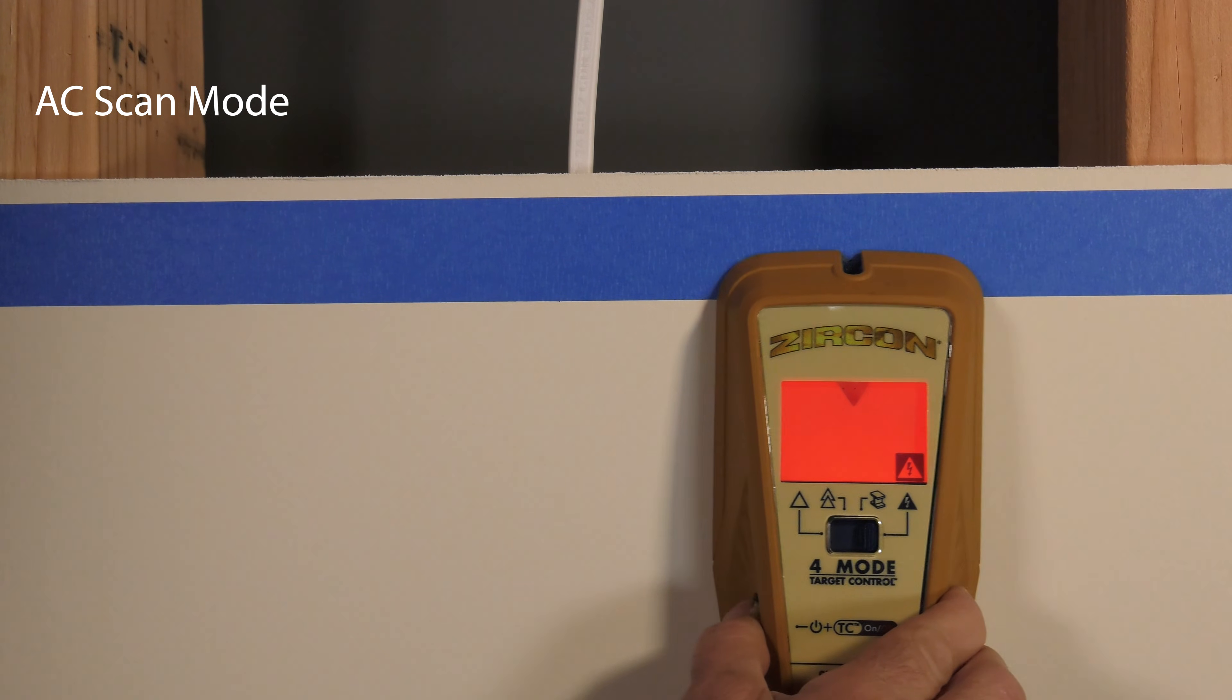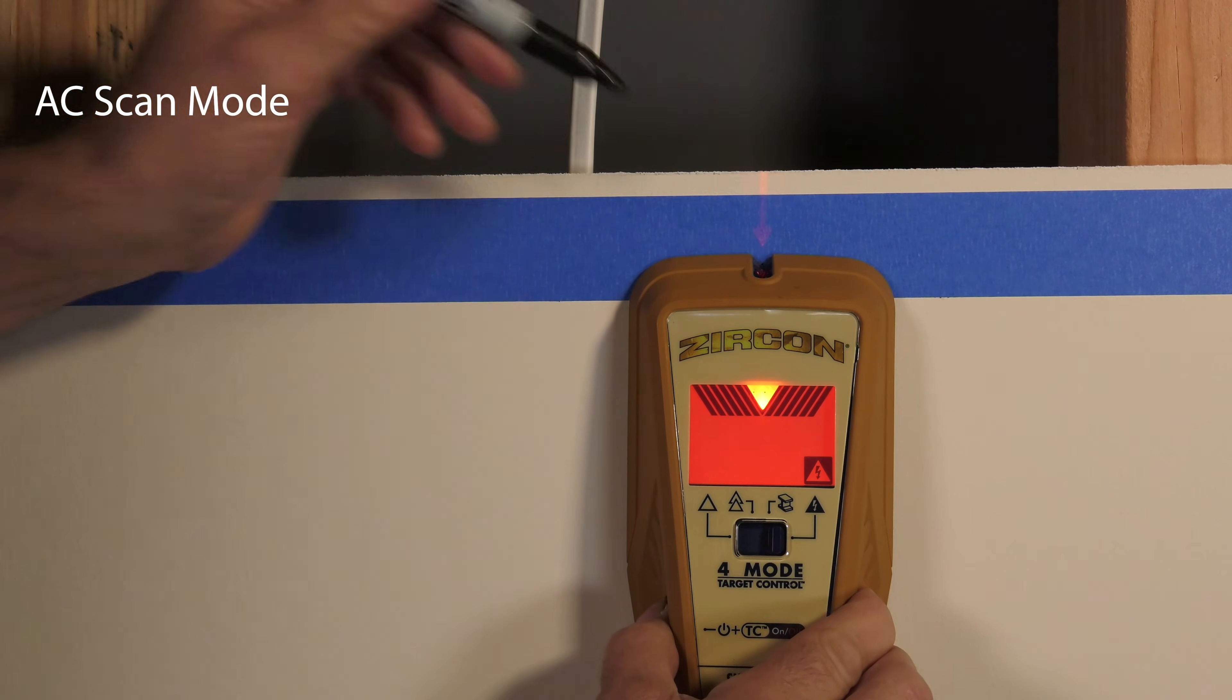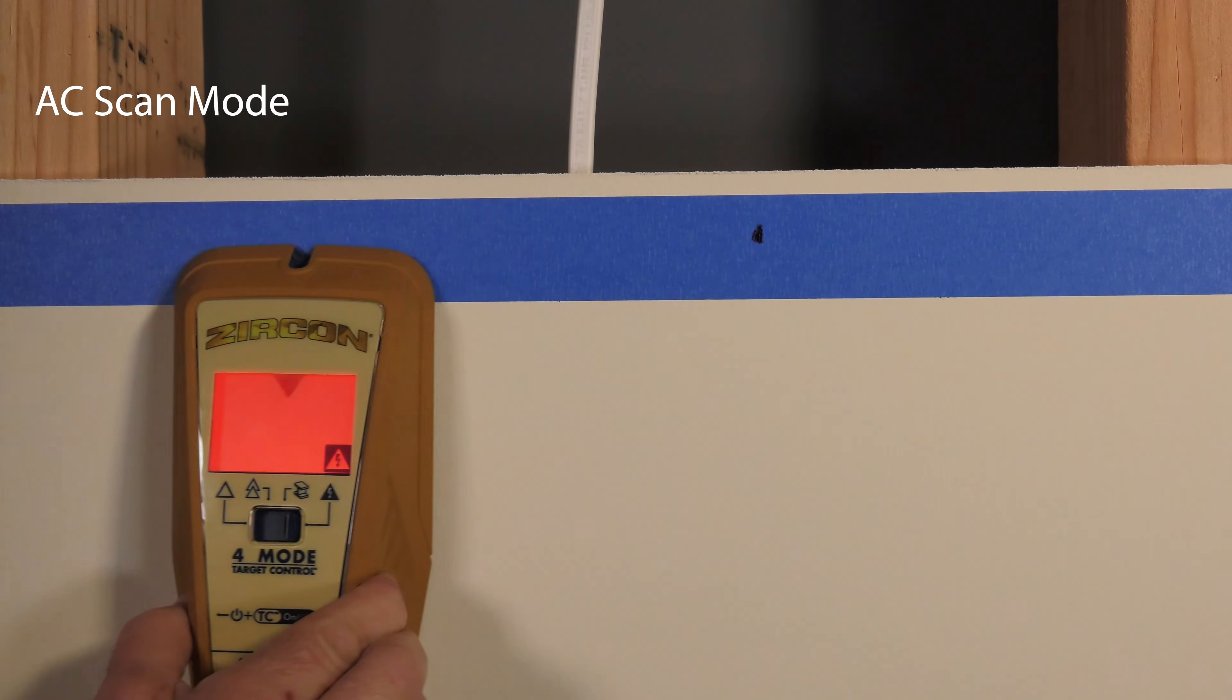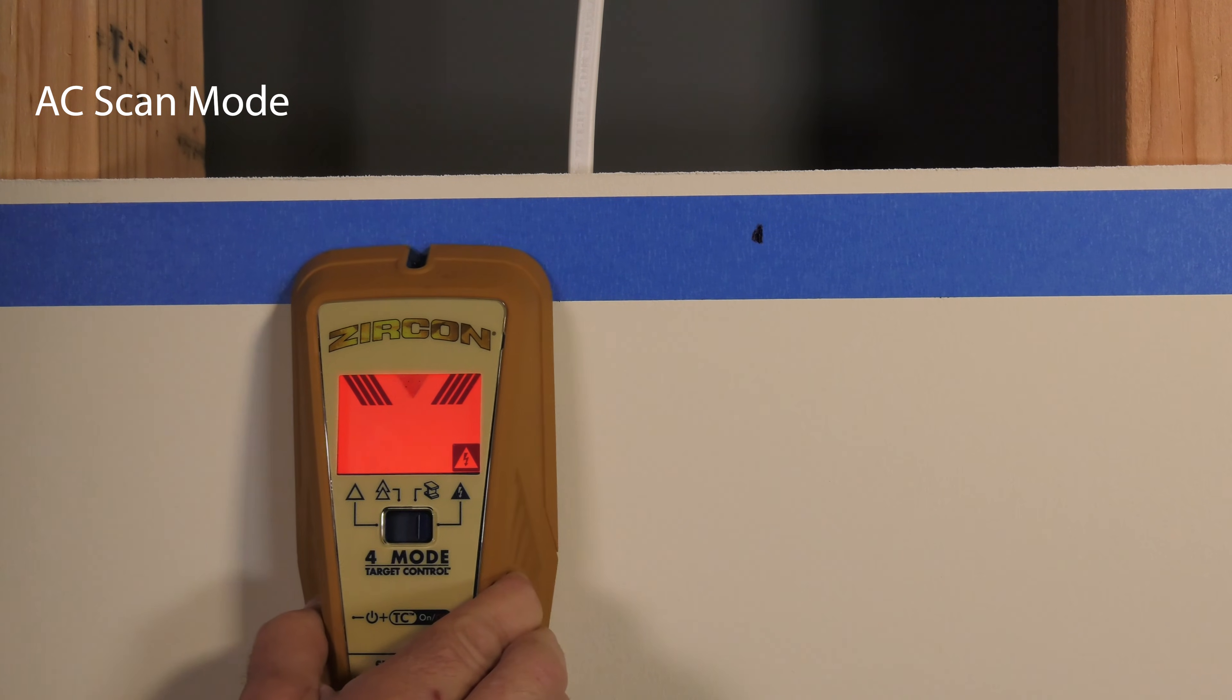Begin scanning. The target indication bars ramp as you approach AC and the spotlight pointer shines when you're near the target. To narrow the results, refer to the interactive calibration method in the instructions.